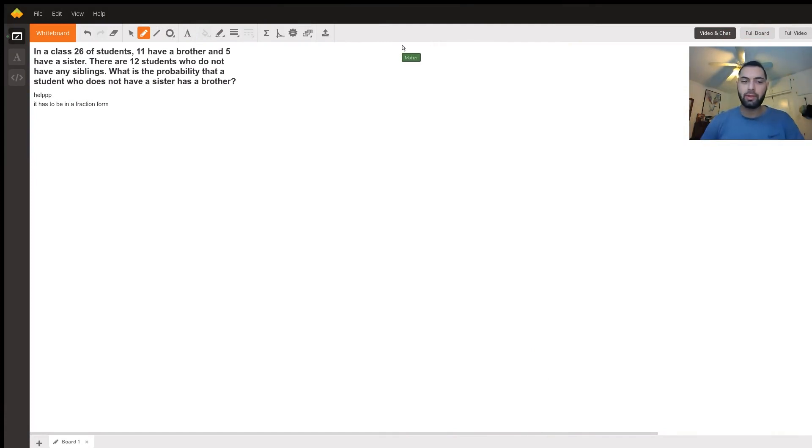Hello, today's question is: in a class of 26 students, 11 have a brother and 5 have a sister. There are 12 students who do not have any siblings. What is the probability that a student who does not have a sister has a brother?